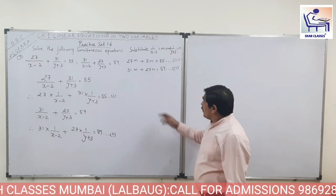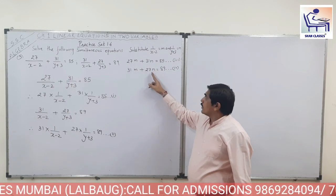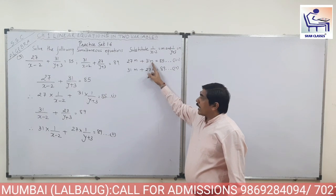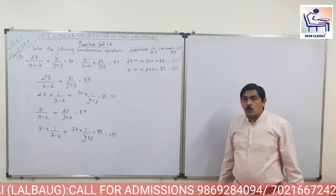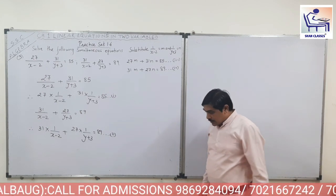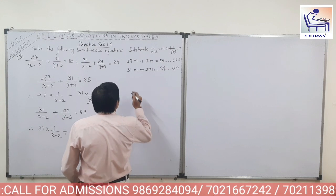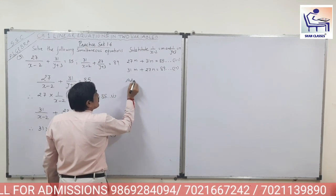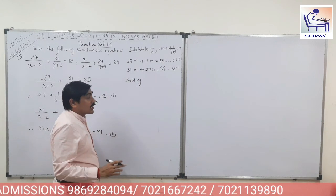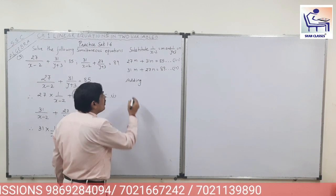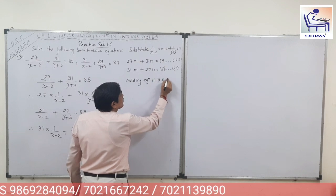This is the same type of sum. The coefficient given to M here is given to N in the next equation, and vice versa. So we have to do one addition and one subtraction. Please check practice set 1.1 question 7 if you are not familiar with this method. Now adding equation 3 and 4.